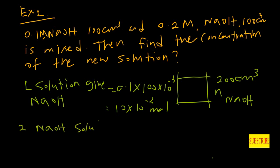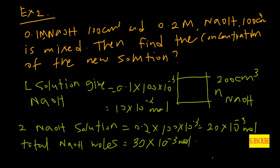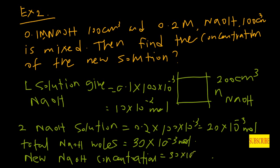The second NaOH solution gives us 0.2 × 100 × 10⁻³, which equals 20 × 10⁻³ moles. The total moles of NaOH equals 30 × 10⁻³ moles. The new NaOH concentration equals number of moles divided by the volume of the new solution: 30 × 10⁻³ divided by 200 × 10⁻³.